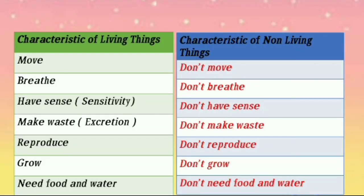Look at the table. The green one is characteristics of living things. The blue one is characteristics of non-living things. Living things move, non-living things don't move. Living things breathe, non-living things don't breathe. Living things have sense, non-living things don't have sense. Living things make waste, non-living things don't make waste. Living things reproduce, non-living things don't reproduce. Living things grow, non-living things don't grow. Living things need food and water, non-living things don't need food and water.